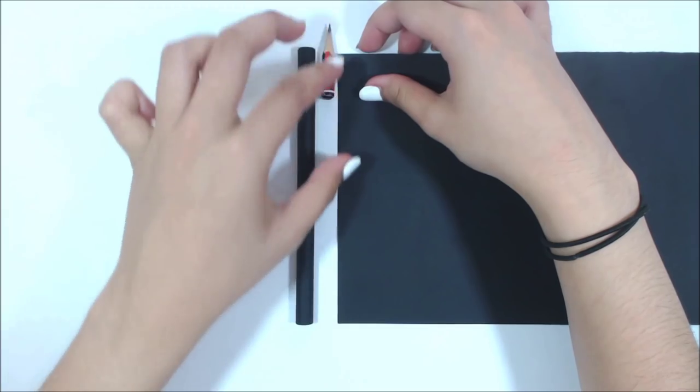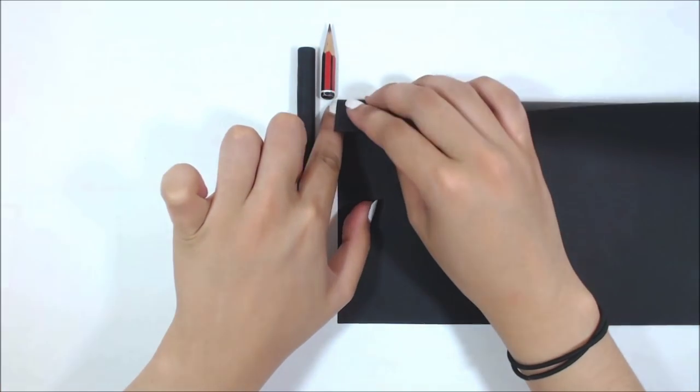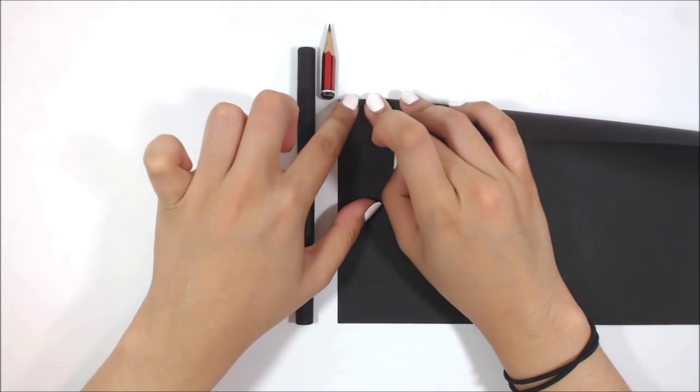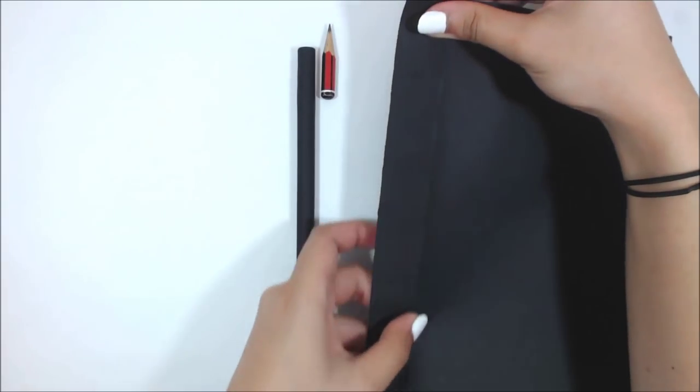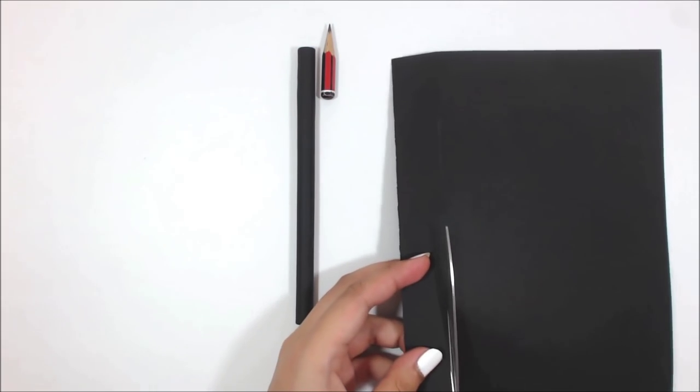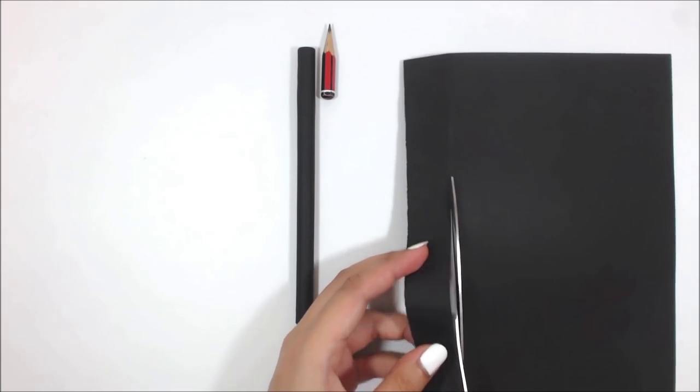The next step is to take the other half of the A4 paper and roughly cut away two centimeters from the paper, or the length of the pencil that you want to make.